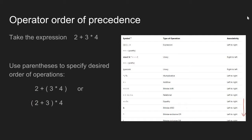Operator order of precedence: all operators in C-sharp have an order in which they are executed. For example, with the expression 2 plus 3 times 4, a C-sharp precedence table tells us that additive operators like plus and minus occur after multiplicative operators like multiply and divide. So C-sharp would first multiply 3 by 4, then add 2. There's an order of precedence it follows.